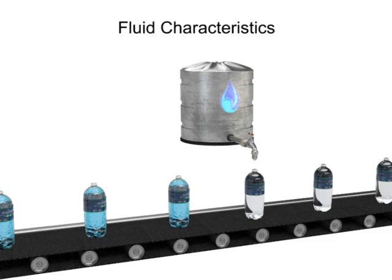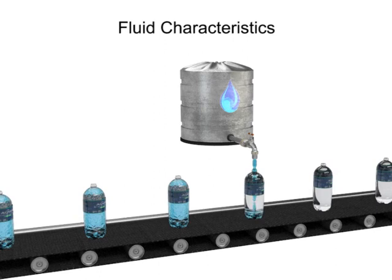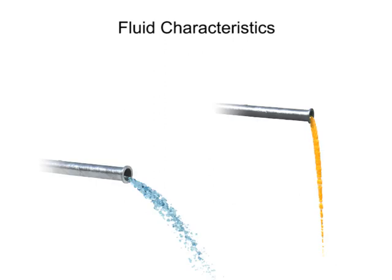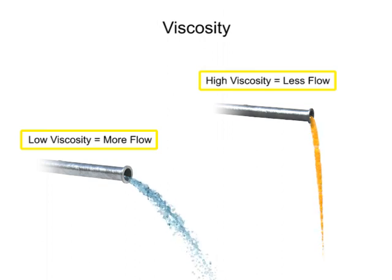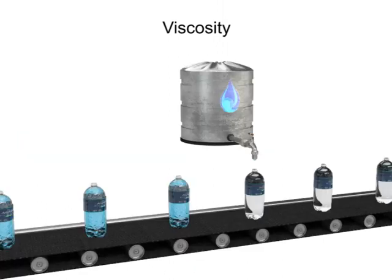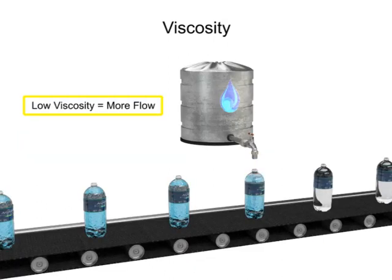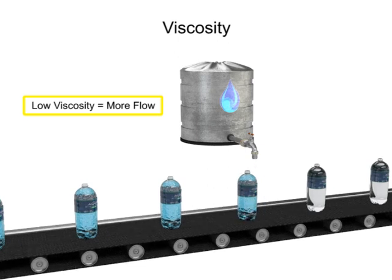Fluids used in mechanical systems come in many different types. The type of fluid chosen for a particular application depends on its characteristics. One of the most important characteristics of a fluid is its viscosity. Viscosity is defined as a fluid's resistance to flow. Fluids with low viscosity flow very easily. Water is a type of fluid with low viscosity.